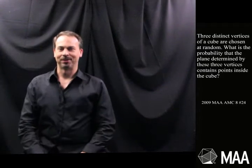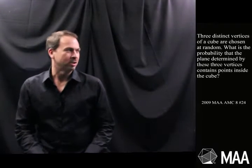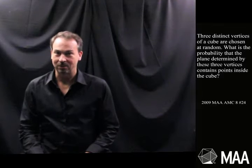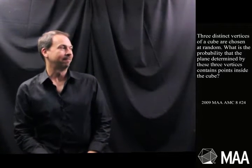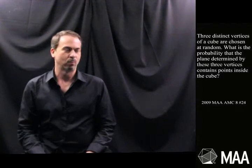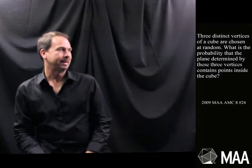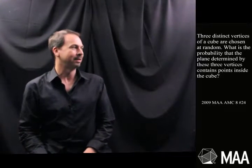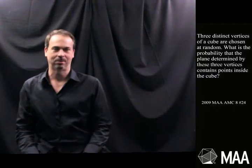G'day! Welcome to another Curriculum Burst. Here's a probability question for the lower high school grades, and it goes as follows. Three distinct vertices of a cube are chosen at random. What is the probability that the plane determined by these three vertices contains a point inside the cube?